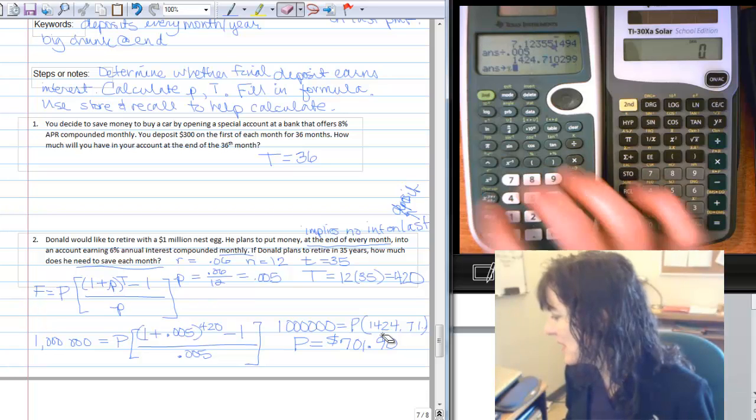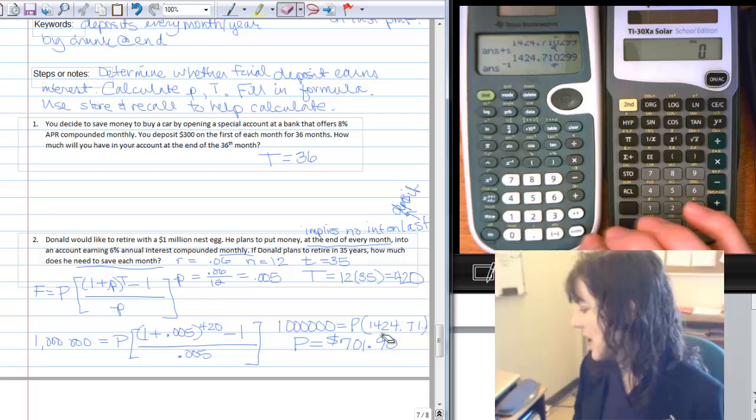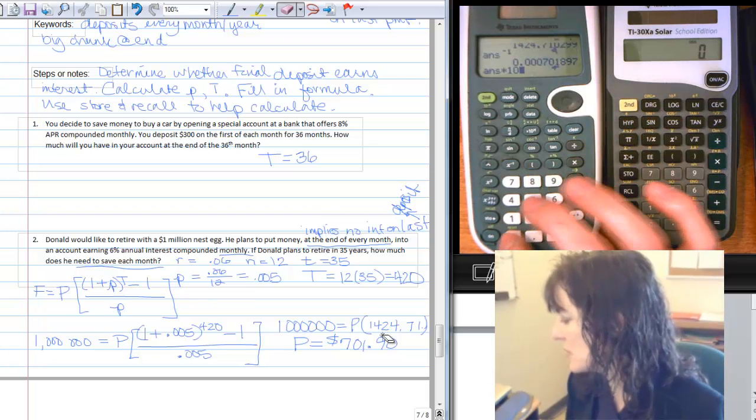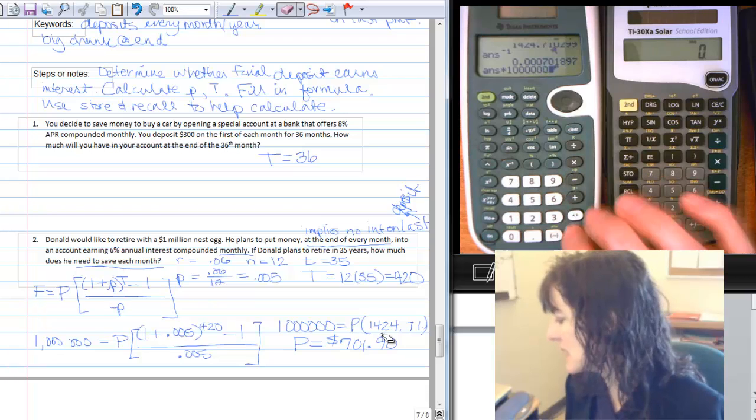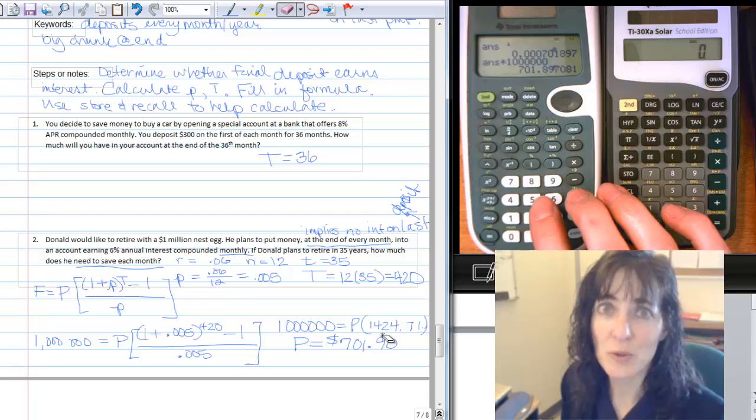So I'll store that in the x first, and then I'll do 1 over that number, and multiply by 1,000,000, equals, and there's my $701 rounded to 90 cents.